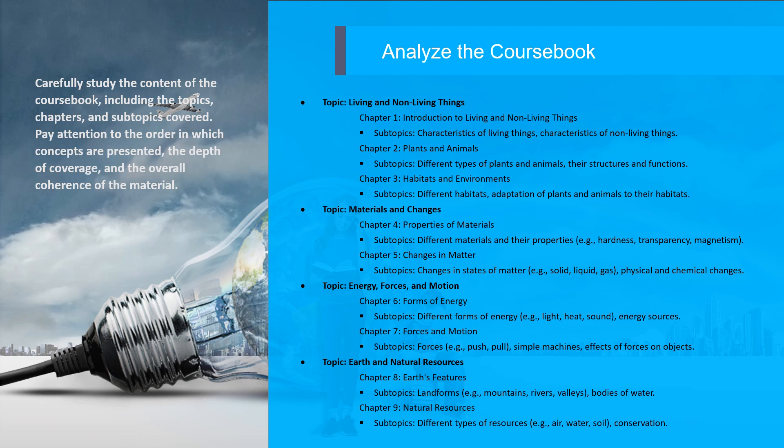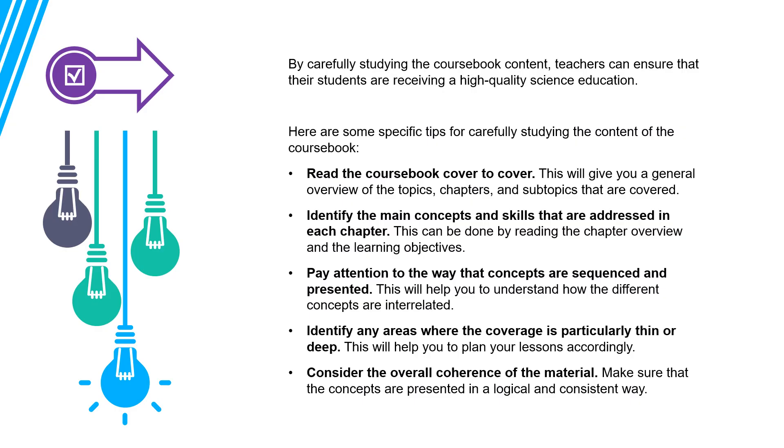Here are some examples of topics, chapters, and sub-topics that could be covered in a primary science coursebook. These examples demonstrate the organization of topics, chapters, and sub-topics within a primary science coursebook. The order and depth of coverage may vary depending on the specific coursebook and curriculum standards. It's important to assess the coherence and progression of concepts to ensure effective learning. By carefully studying the coursebook content, teachers can ensure that their students are receiving a high-quality science education.